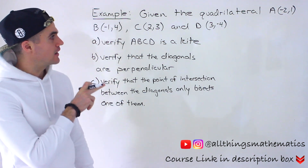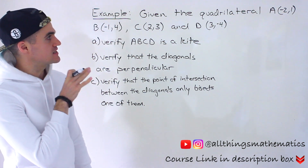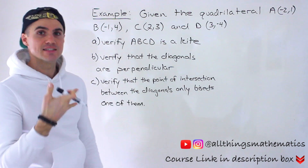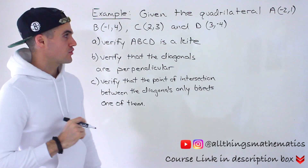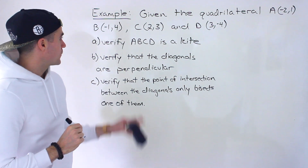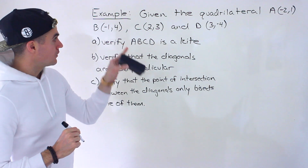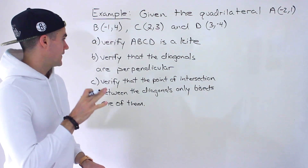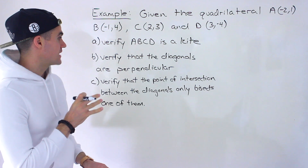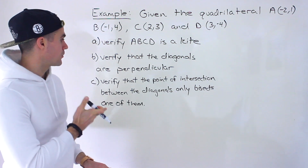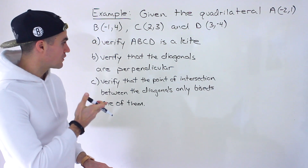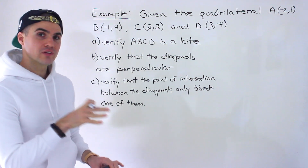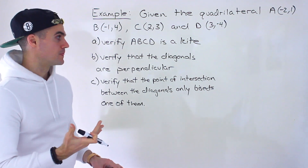We are given a quadrilateral with vertices A(-2, 1), B(-1, 4), C(2, 3), and D(3, -4). We have to verify that quadrilateral ABCD is a kite. In part B, we have to verify that the diagonals are perpendicular. And in part C, we have to verify that the point of intersection between the diagonals only bisects one of them.